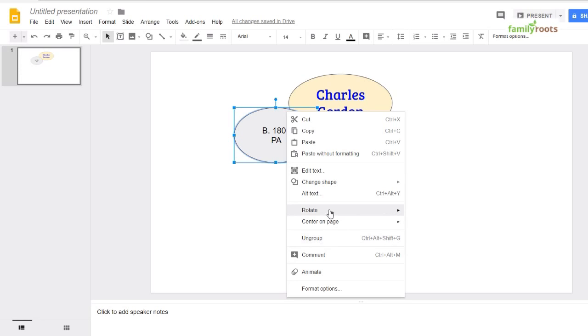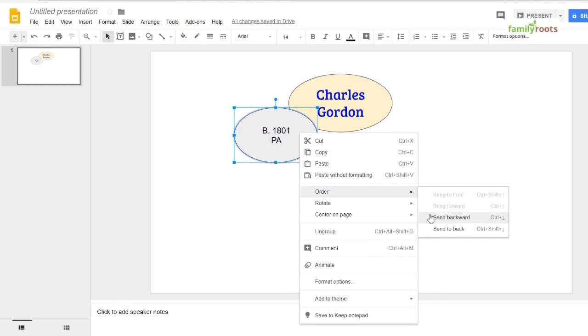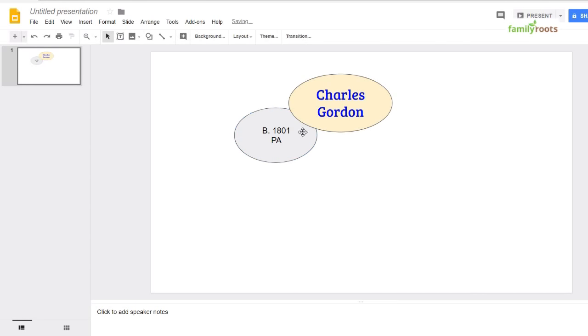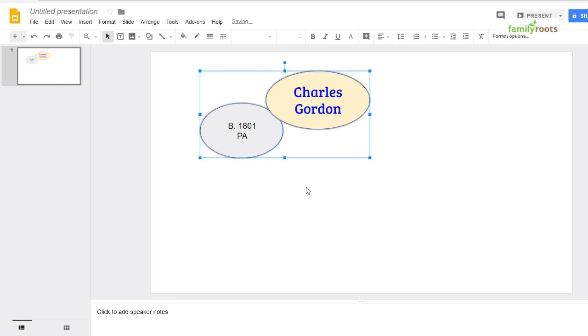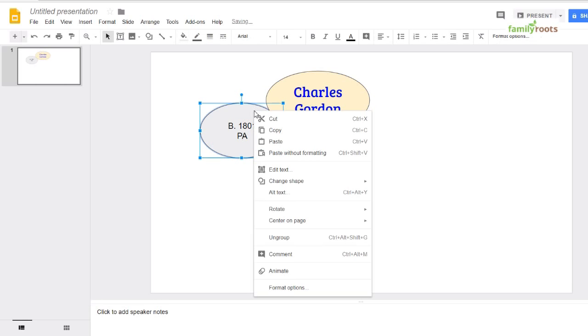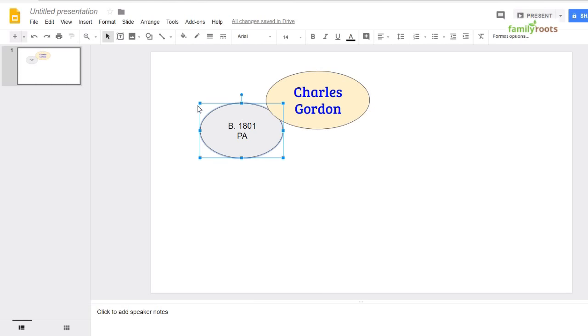then go to order, send it back, and now it's in the back. So I can decrease the size of the oval just because the birth date isn't, in this case, as important as the name of the individual.